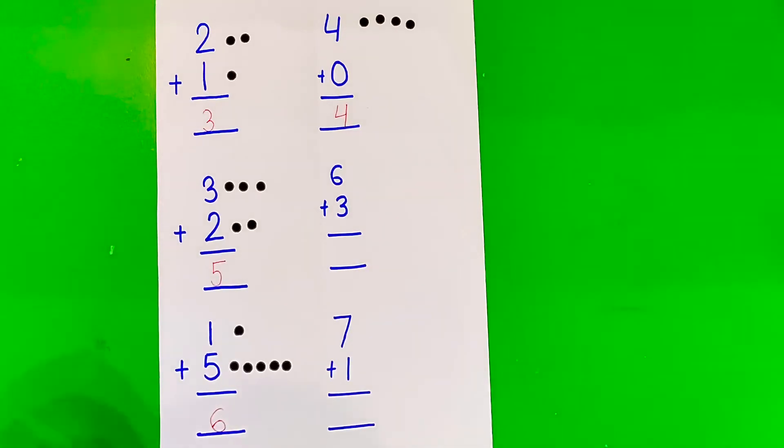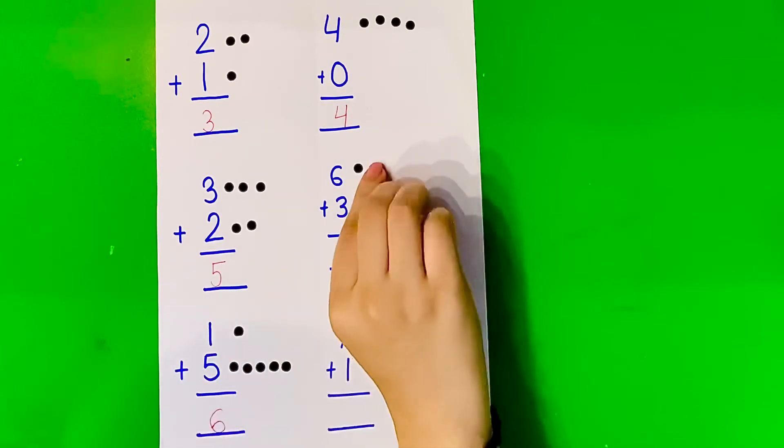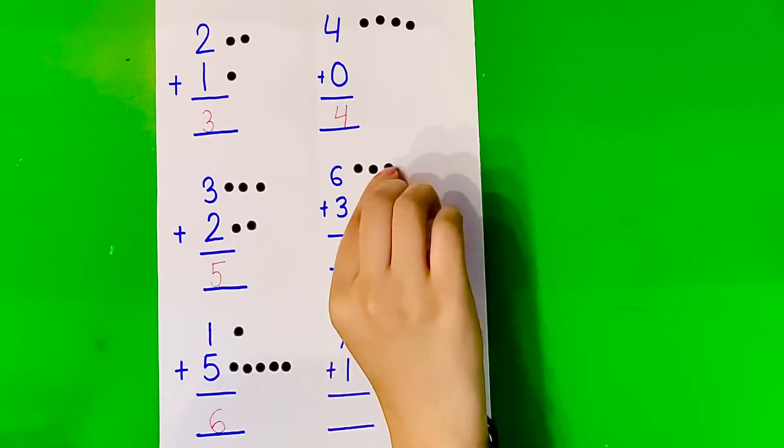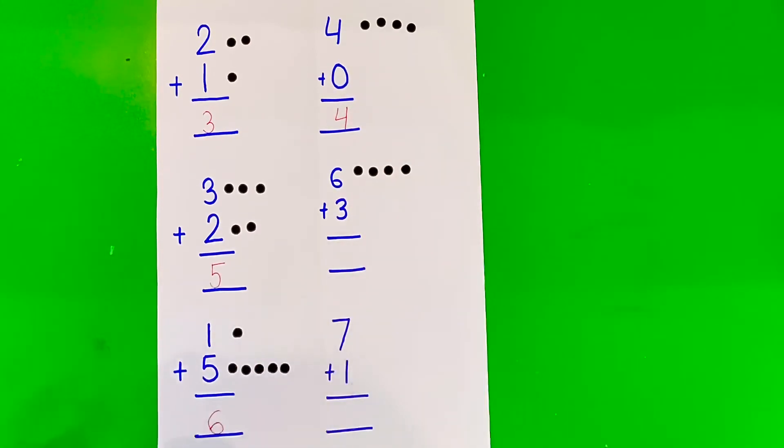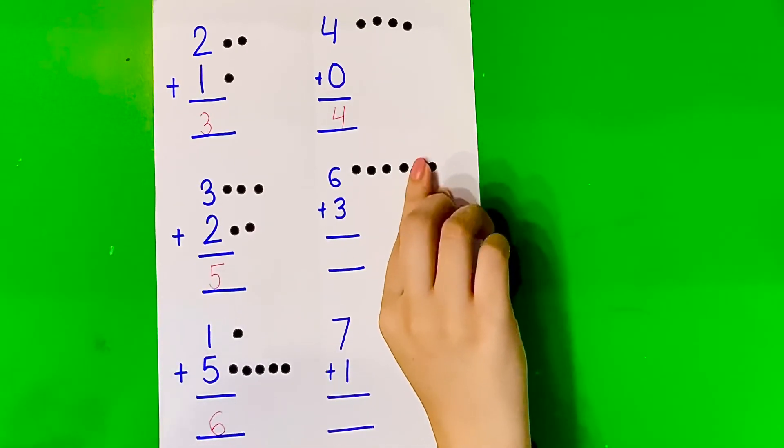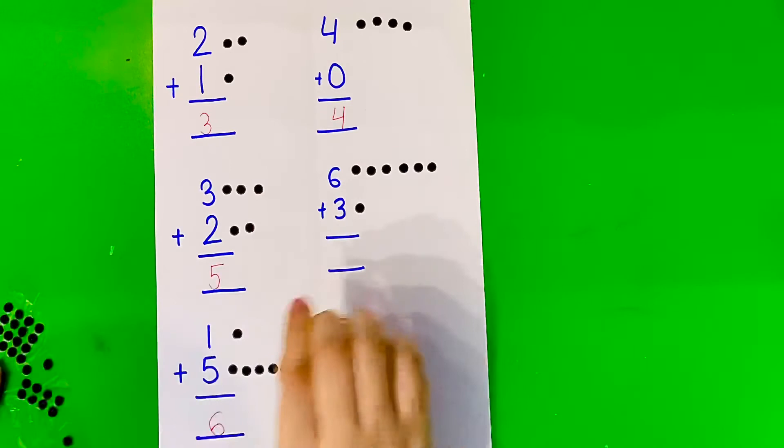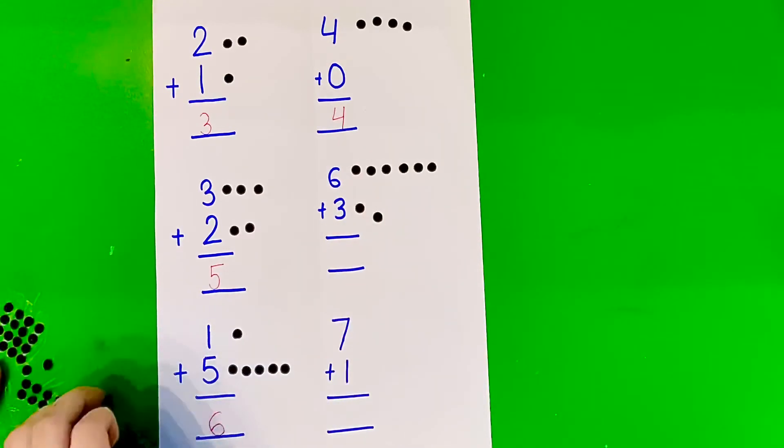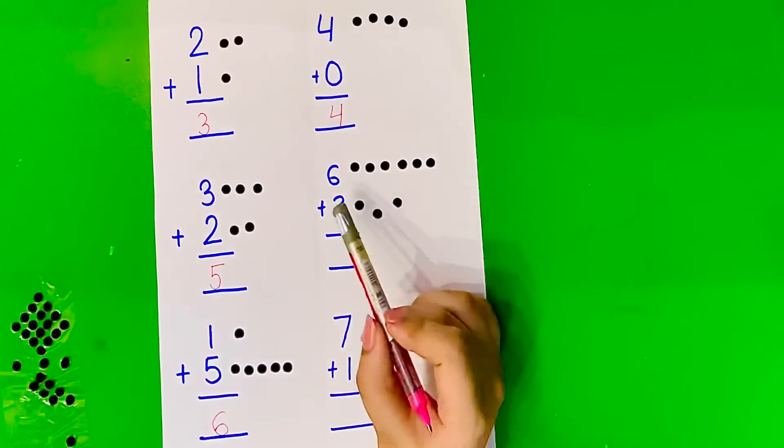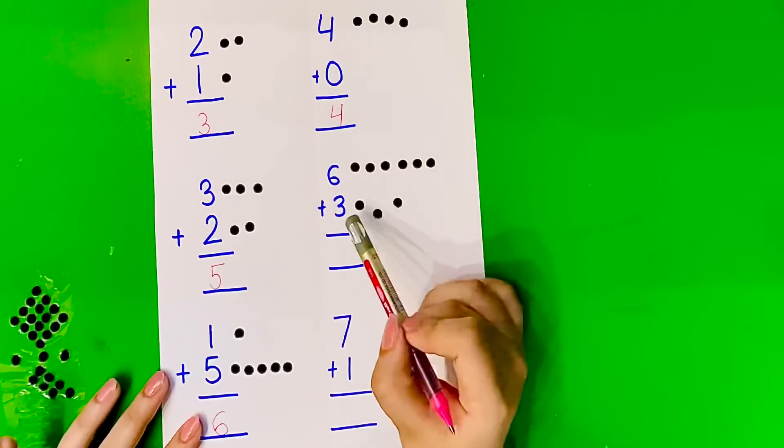Now let us do 6 plus 3. First we're going to paste 6 bindhies, and then we're going to paste 3. So let us count what is 6 plus 3: 1, 2, 3, 4, 5, 6, 7, 8, 9.